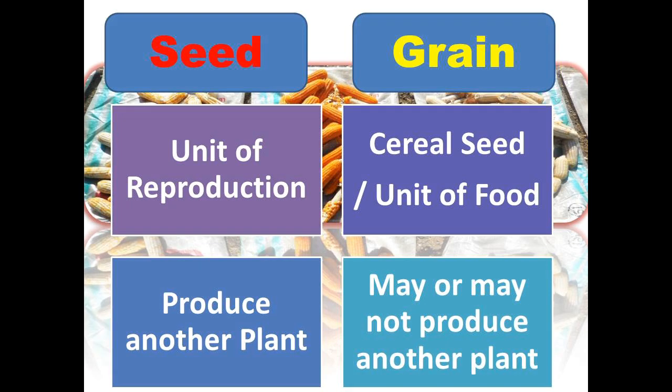First of all, the very general and basic difference: seed is always used as a unit of reproduction. Seed is used for sowing and for getting the next generation of the crop. Whereas, as the grain is concerned, the seed of cereals is called a grain. And secondly, grain is basically used as food only, and not used for sowing or reproduction purposes.